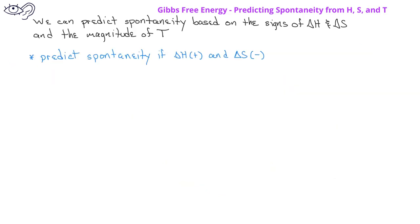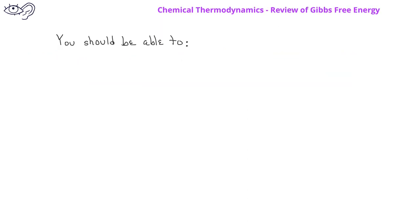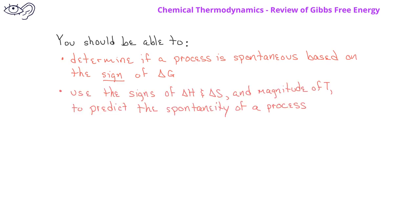By now, you should be able to go through similar types of analysis for a reaction that has a positive enthalpy change and a negative entropy change. You might also want to go through this exercise to predict what will happen for a process that has a positive enthalpy change and a positive entropy change. You should also be able to determine if a process is spontaneous based on the sign of the Gibbs free energy change, and use the signs of the enthalpy change and entropy change to predict if a given process is going to be spontaneous.